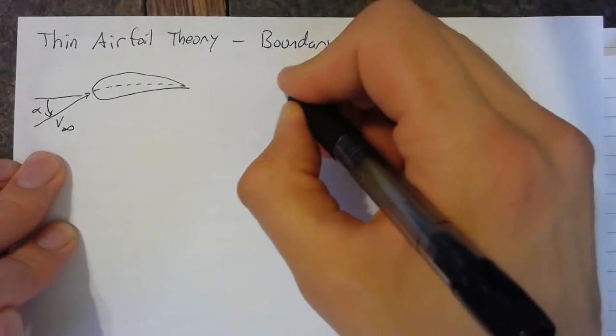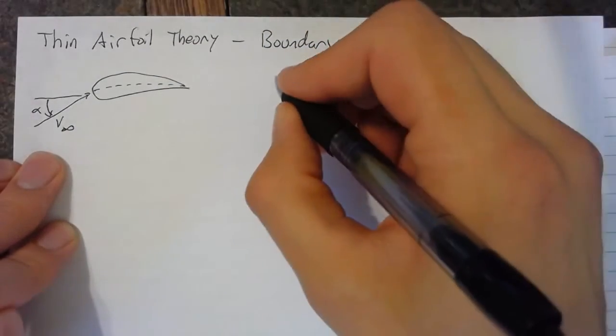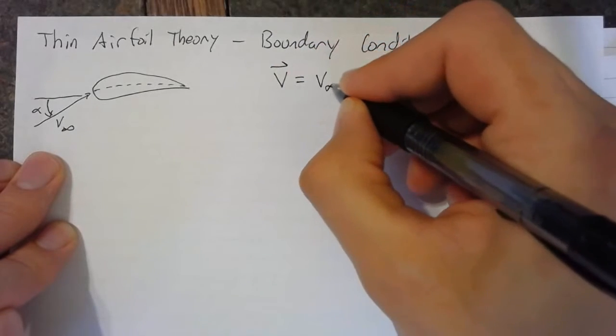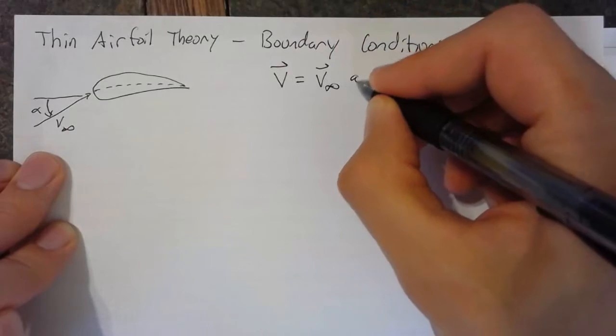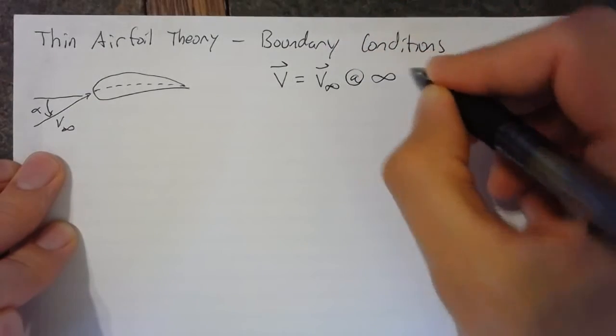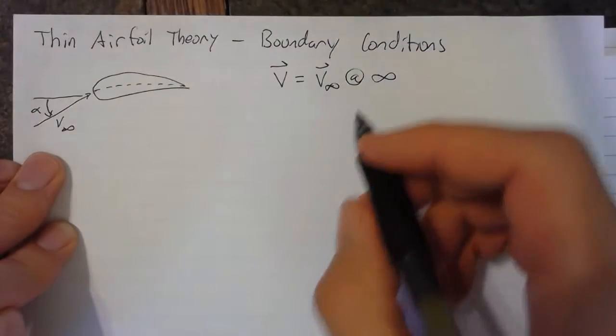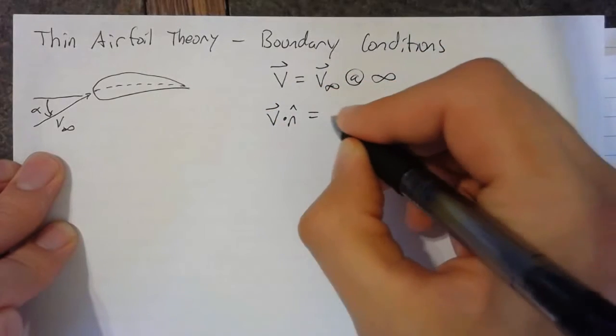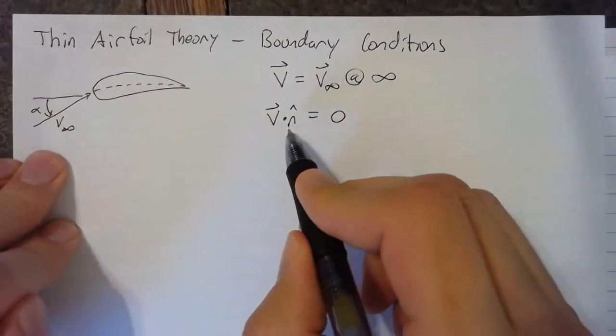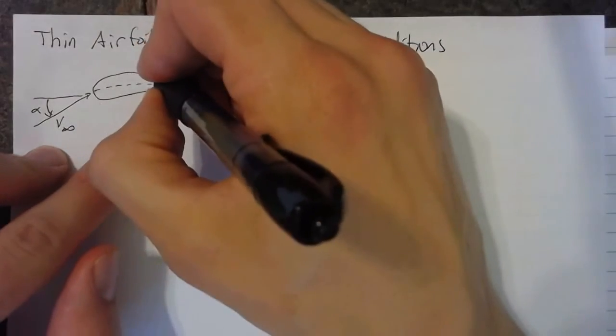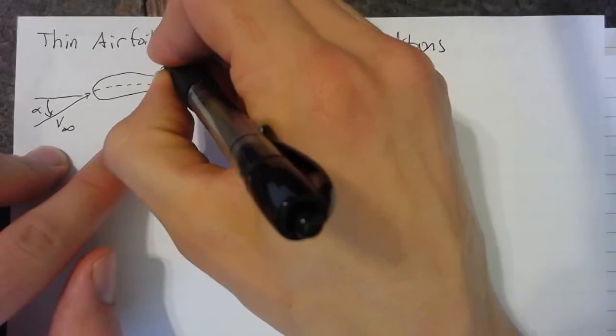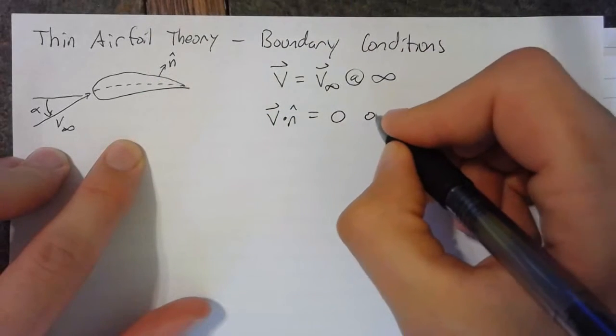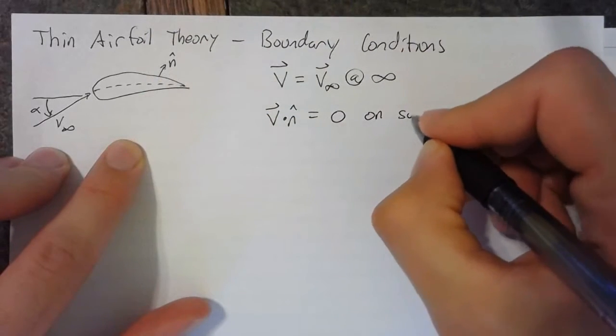Now, the boundary conditions that we want to apply are that our velocity is equal to simply our inflow far away from the airfoil. We're saying this is at infinity. Likewise, on the surface of our airfoil, we want to say that V dot N, which is to say that the flow through the surface, is equal to zero. And this is on the surface.